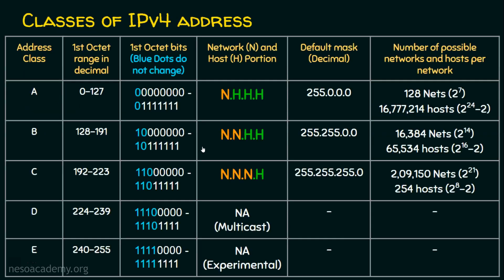There are basically five classes and we are going to see some examples using class A. In class A, the first octet will be between 0 and 127. The network portion is the first octet, so in an IP address the first octet represents the network portion. The remaining three octets represent the host portion. The default subnet mask is 255.0.0.0.